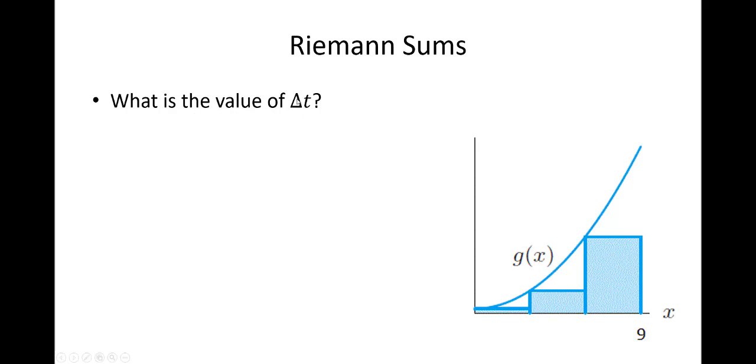What's the value of the change of t? Well, I got an x there. It should be a t, huh? If this is nine, and I jumped by threes, three, six, nine, then the width of each rectangle would be three.